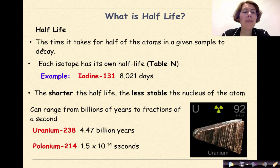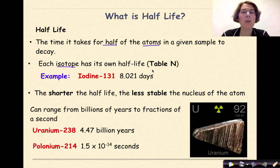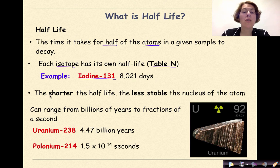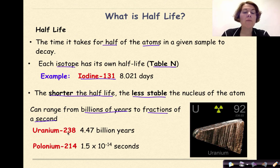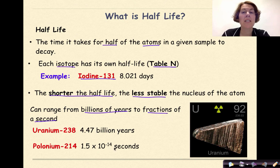So what is half-life? Half-life is the time it takes for half of the atoms in a given sample to decay. Each isotope has its own half-life, and we're going to be looking at a sample of those from Table N. One example is iodine-131, which has a half-life of 8.021 days. The shorter the half-life, the less stable the nucleus of the atom. Half-life can range from billions of years to fractions of a second — uranium-238 has a half-life of 4.47 billion years, while polonium-214 has a half-life of 1.5 × 10⁻¹⁴ seconds.